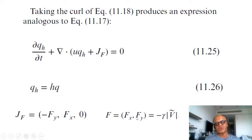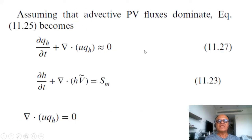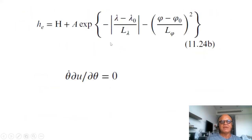So again simplify the dissipation term as minus gamma v tilde and assuming that advective pv fluxes dominate. As before we had said j a is much greater than j theta and jf. In this case j theta is 0, we have set adiabatic, adiabatic term to zero.